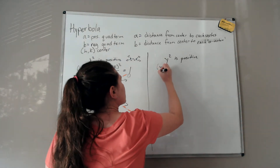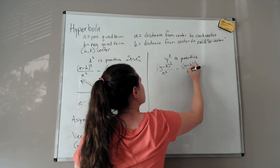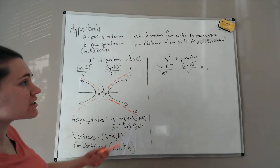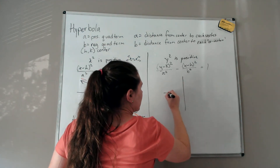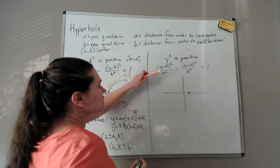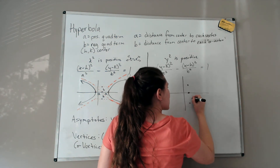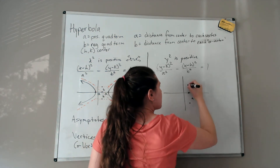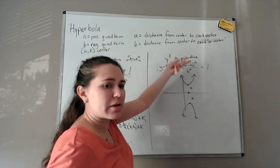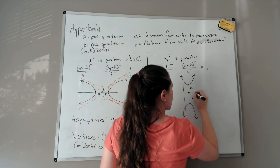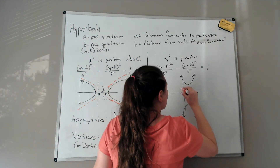When y-squared is the positive term, the standard form is (y minus k)² over a² minus (x minus h)² over b² equals 1. The center is h, k — remember h always goes with x. Since y is positive, a represents movement up and down, so your vertices fall vertically: up a and down a from the center.